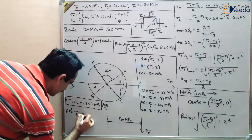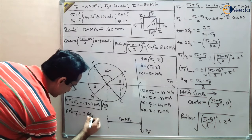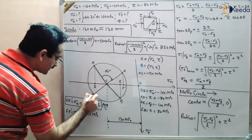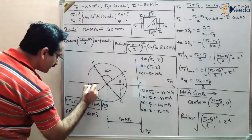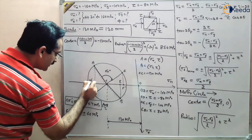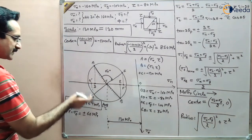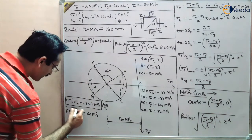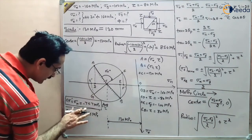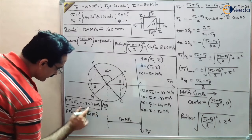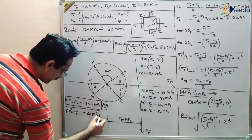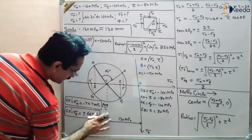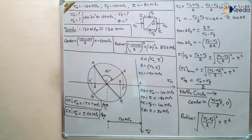Measuring F-dash gives the shear stress sigma_t = ±66 MPa. At the other point G, drawing G to G-dash again gives the same value of sigma_t, confirming the shear stress result.